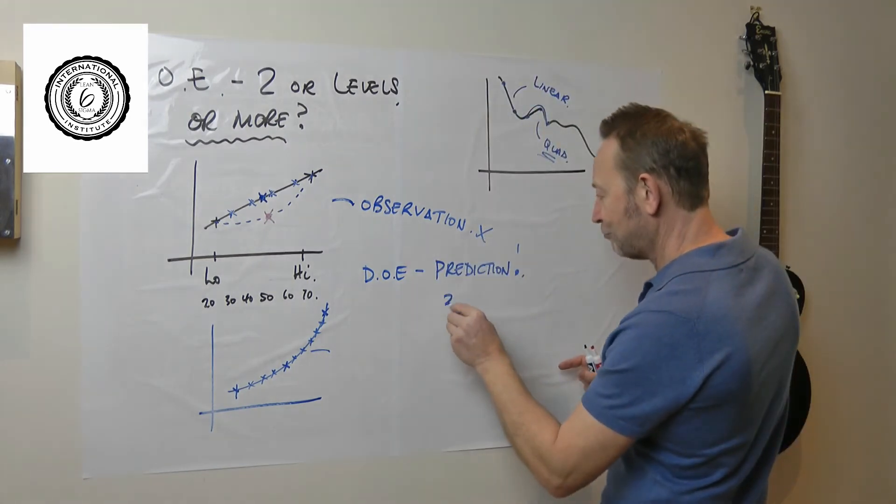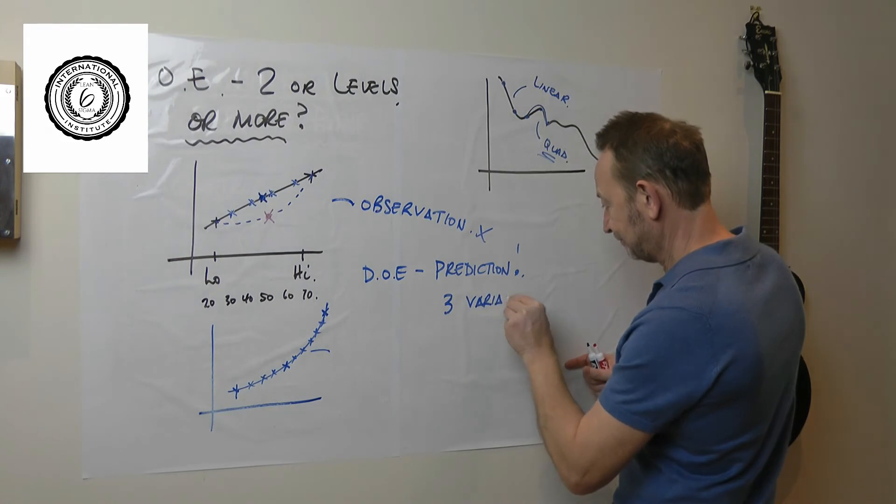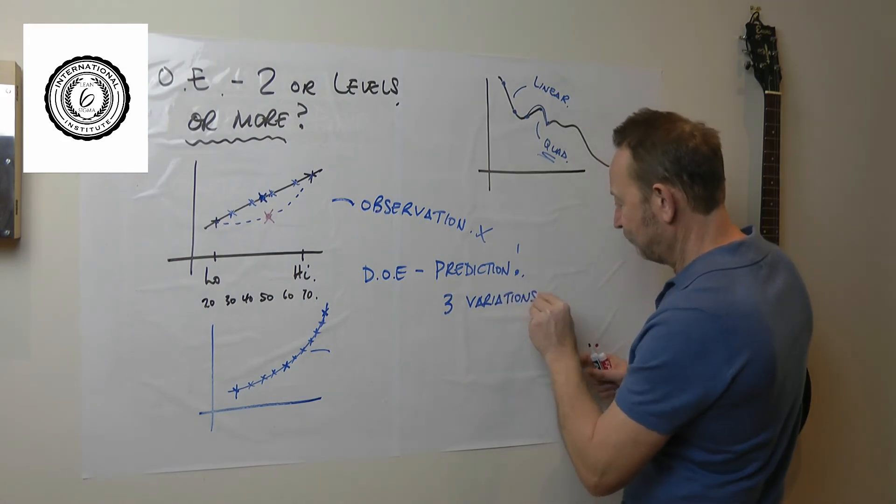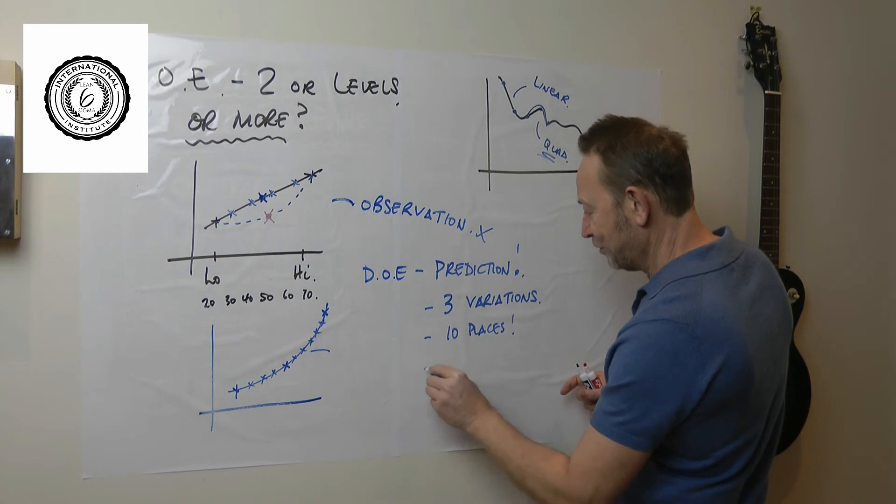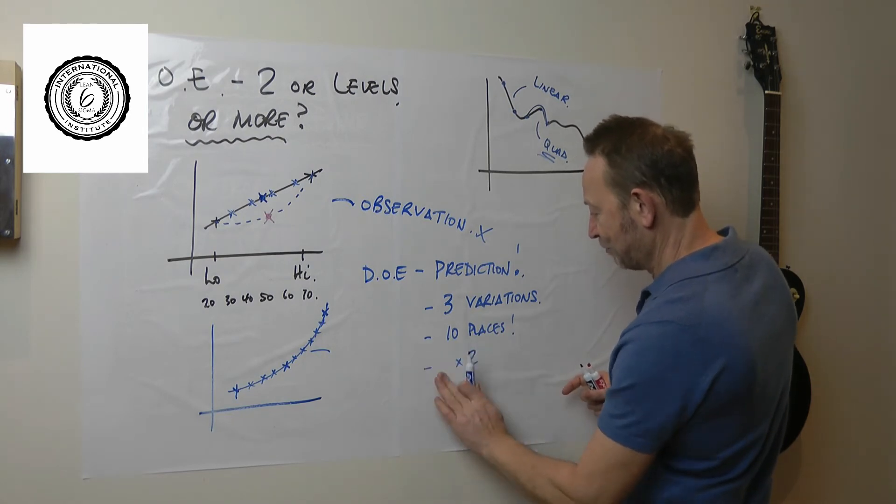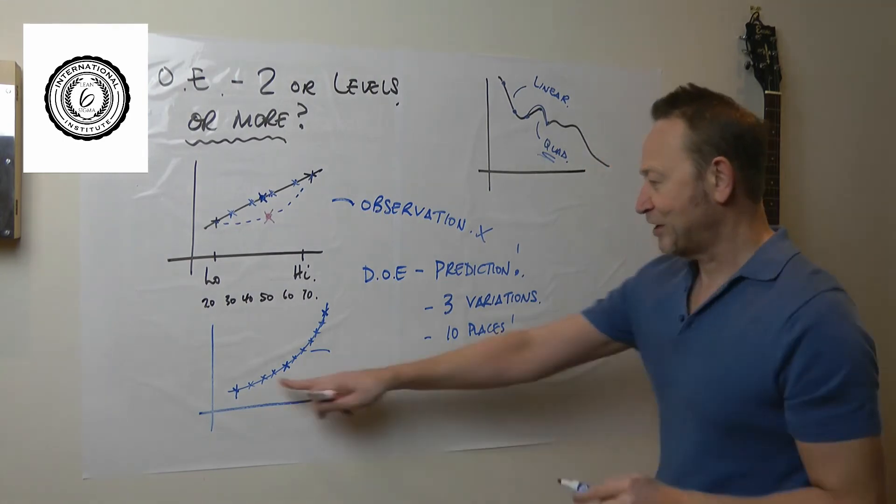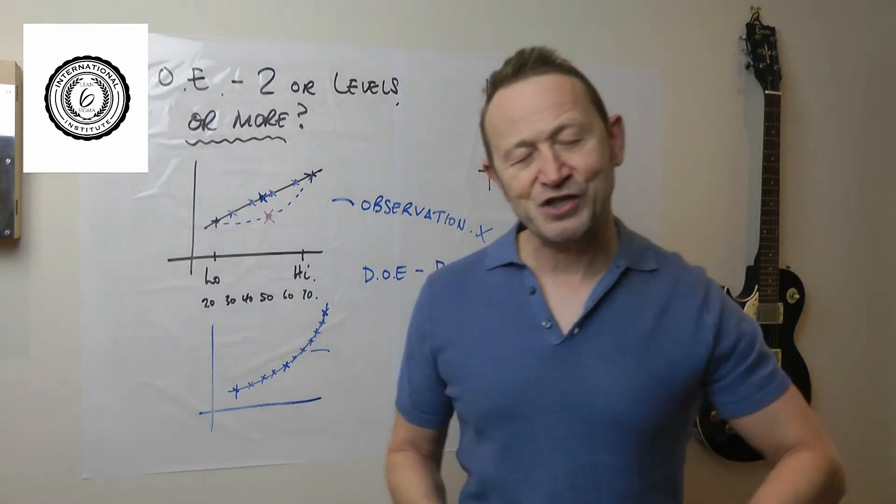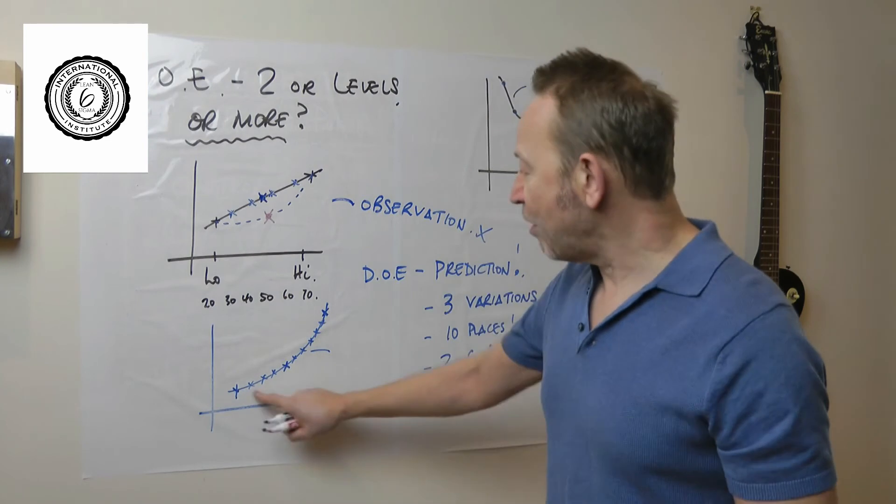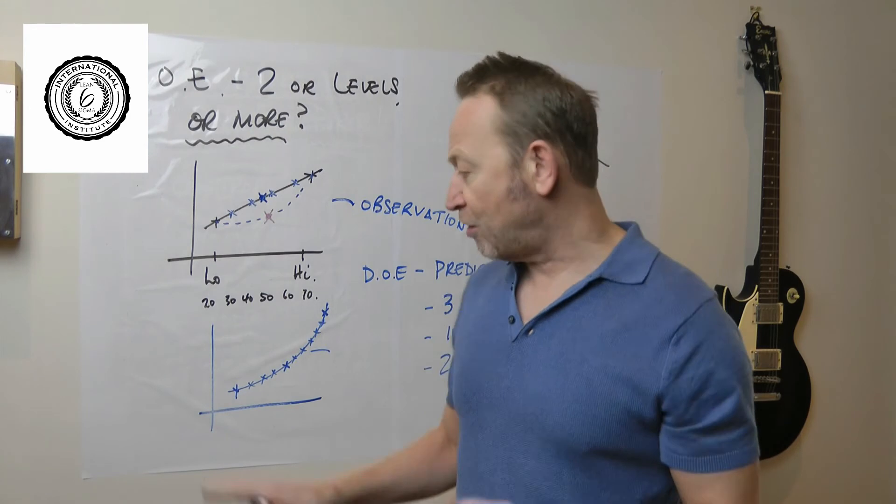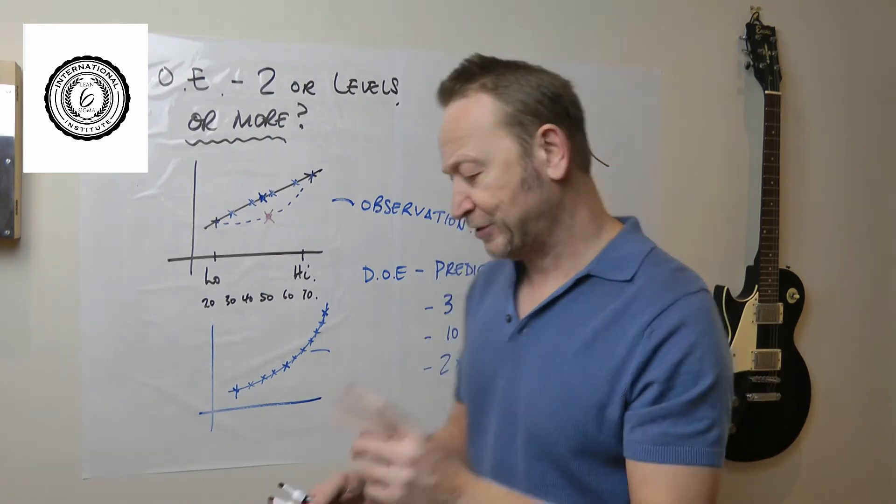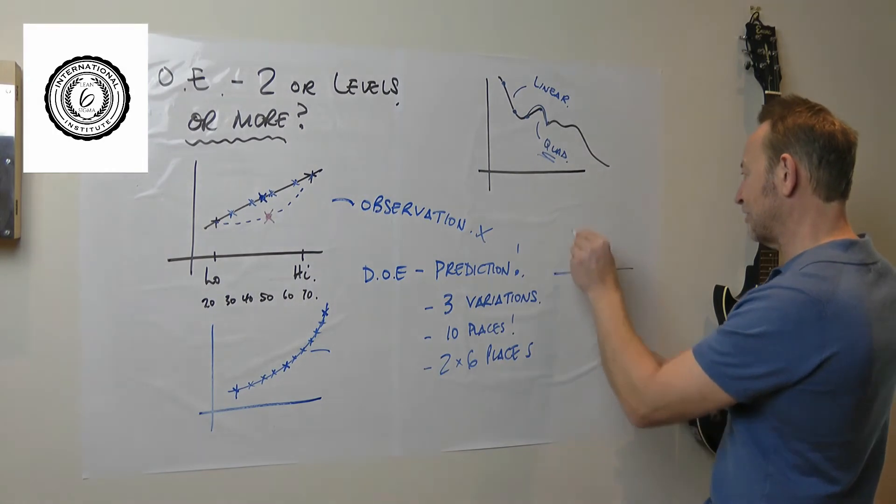The question I was sent, by the way, they had three variables, three variables. And what they wanted to do, they wanted to test one of them in 10 places. And the other two, they wanted to test in six places. So they wanted to do this. I don't understand that. Let the maths do the work. Now, the only reason you would do this, this would be a very rare requirement.